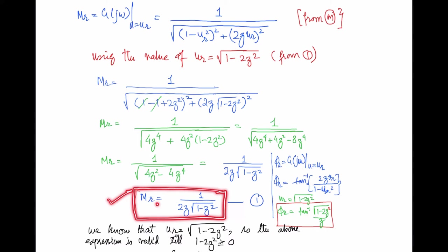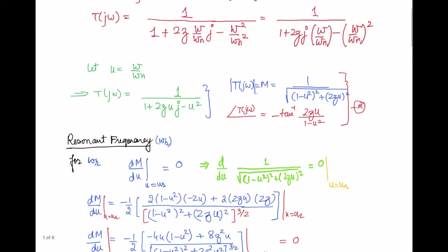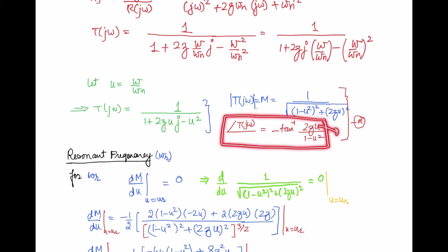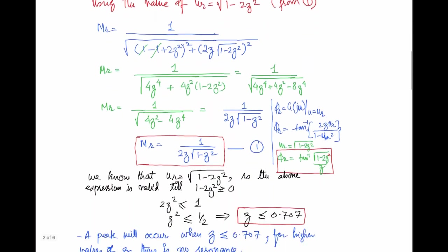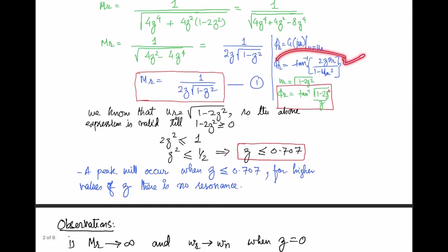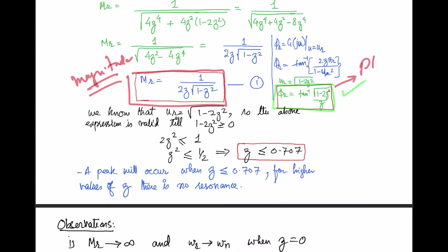Similarly, the phase at which this maximum magnitude occurs is obtained by substituting u = ur into the phase equation. Replacing u with ur in the phase expression gives the phase corresponding to the resonant frequency. So we now have both the magnitude Mr and the phase at the resonant frequency.